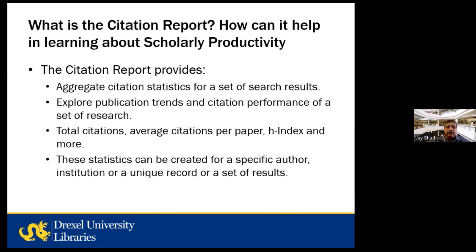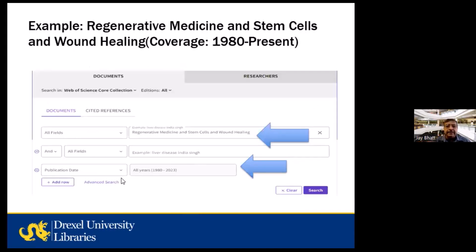This is how the cited reference feature works. Now I want to expand into the citation report and explore what it does — how do I find total number of citations, h-index, and so on. Let's take an example using a very interdisciplinary research topic: regenerative medicine, stem cells, and wound healing. This is a high-growth research area. Coverage is from 1980 to present.